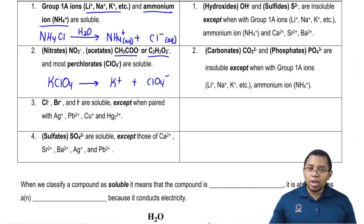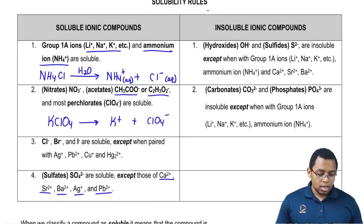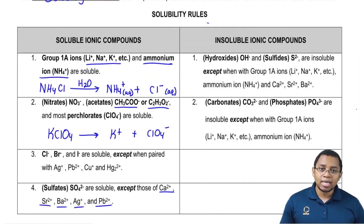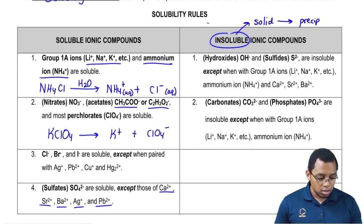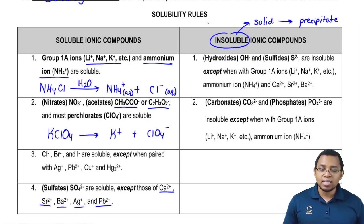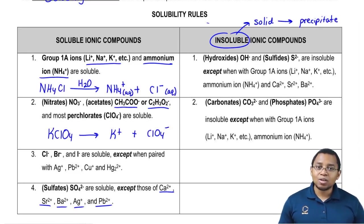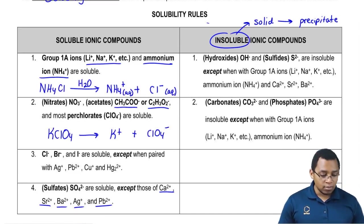Sulfates are soluble, meaning they break up, except when they're with one of these exceptions. Insoluble ionic compounds basically means that they're solids. Another name for solid is precipitate, so you're going to hear these words used interchangeably. Insoluble means it's a solid that doesn't break up, and solid also means precipitate — all three words are saying the same exact thing.